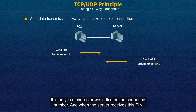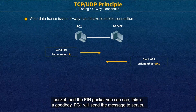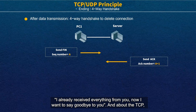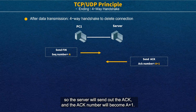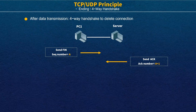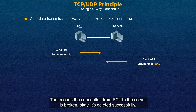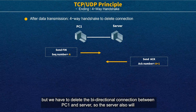When the server receives the FIN packets — which is like a goodbye — PC1 is telling the server: 'I already received everything from you. Now I want to say goodbye.' In TCP, every message received gets an acknowledgement. So the server will send out the ACK with ACK number A+1. This means the direction from PC1 to server is broken — deleted successfully.